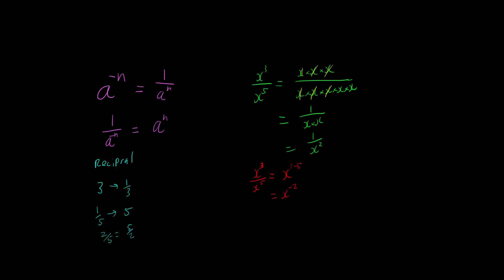Now we've shown that x cubed over x to the 5 is 1 over x squared. And we've also shown that x cubed over x to the 5 is x to the negative 2. And because we started off with exactly the same situation, that means that these two are the same. So we can take our negative index and write it as a positive index by taking the reciprocal.